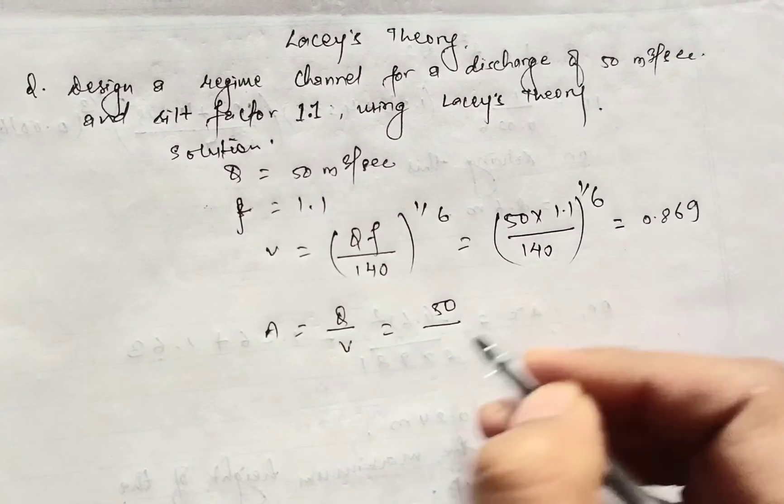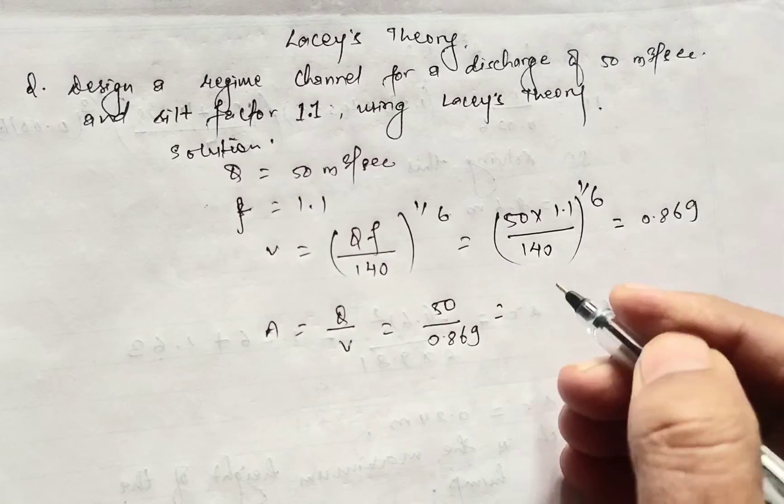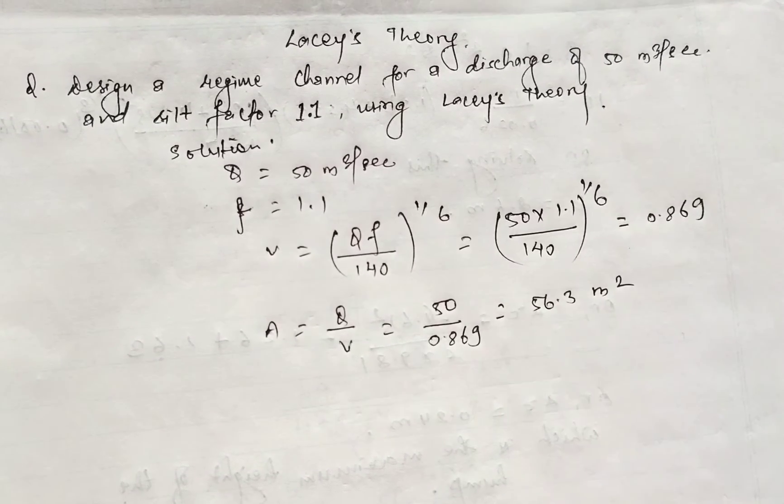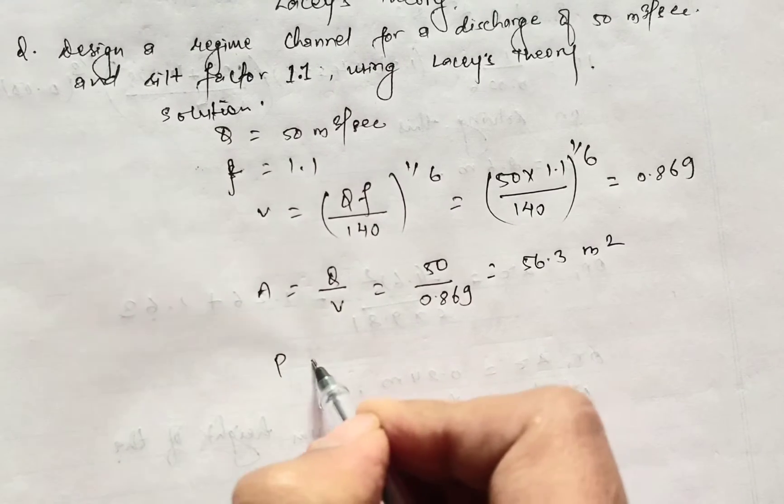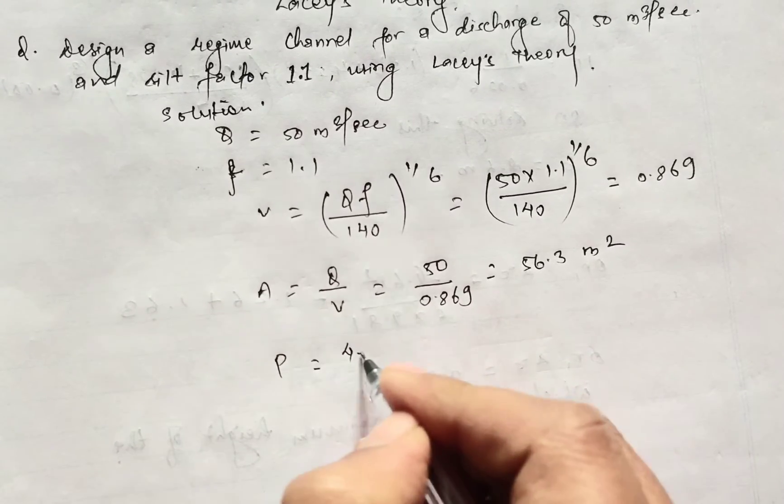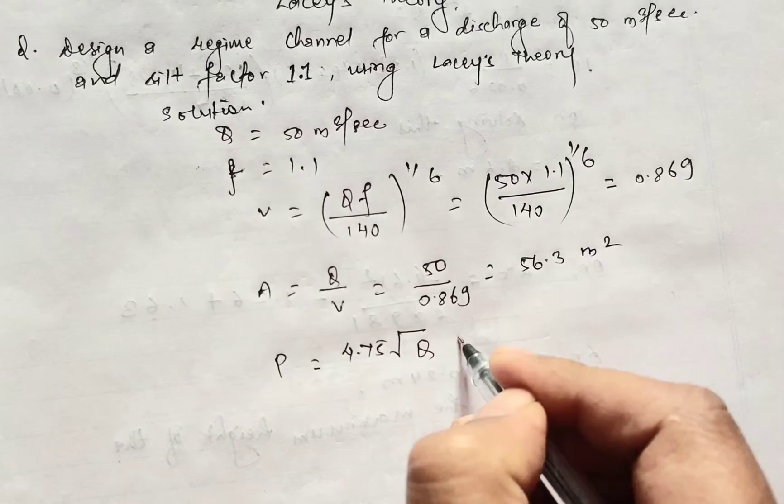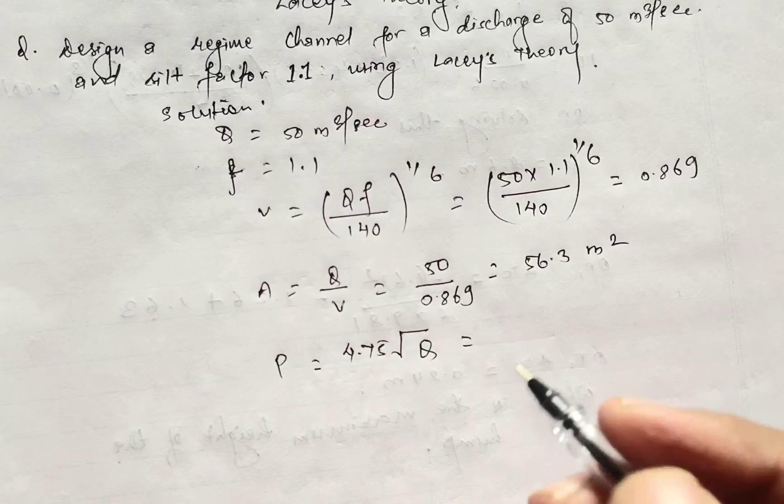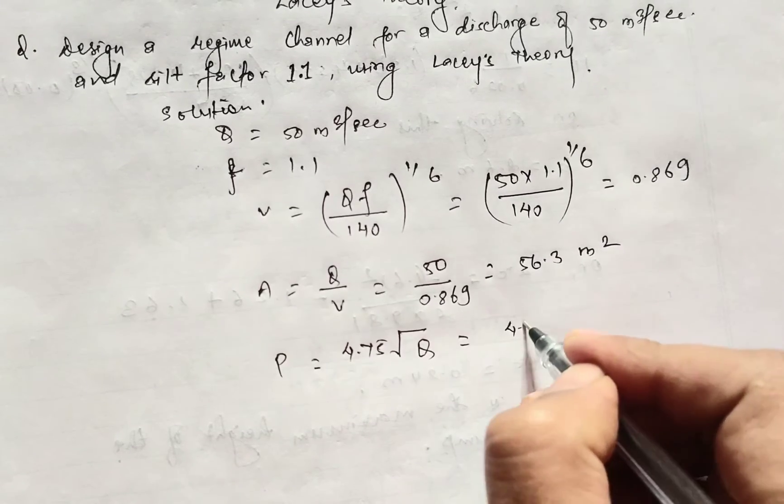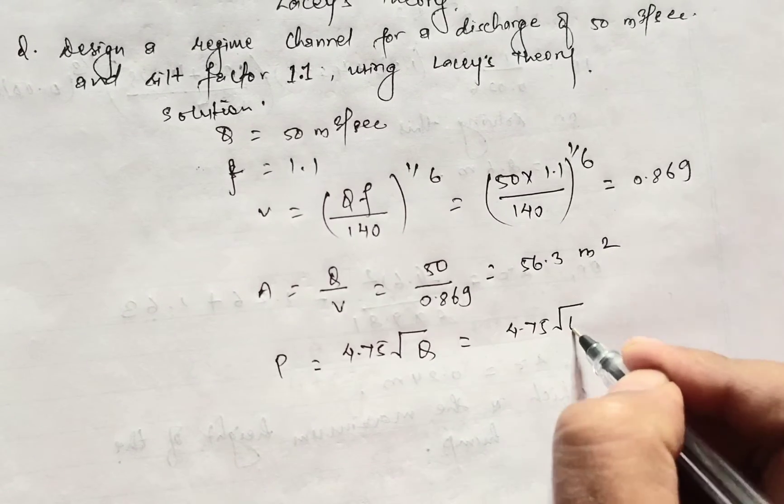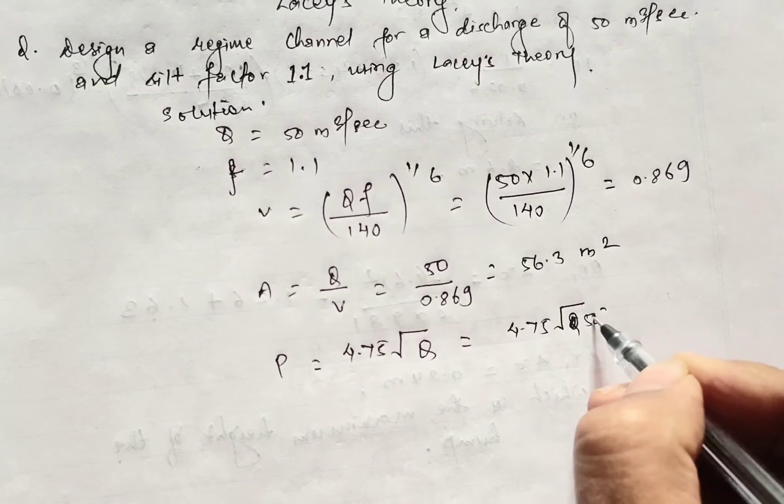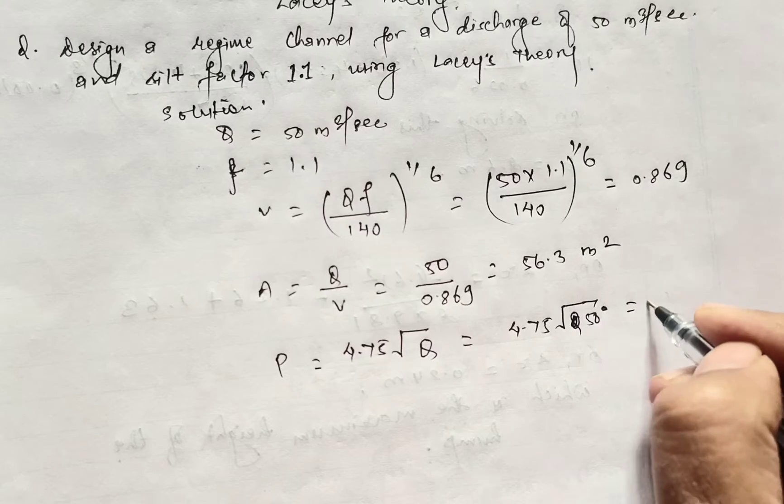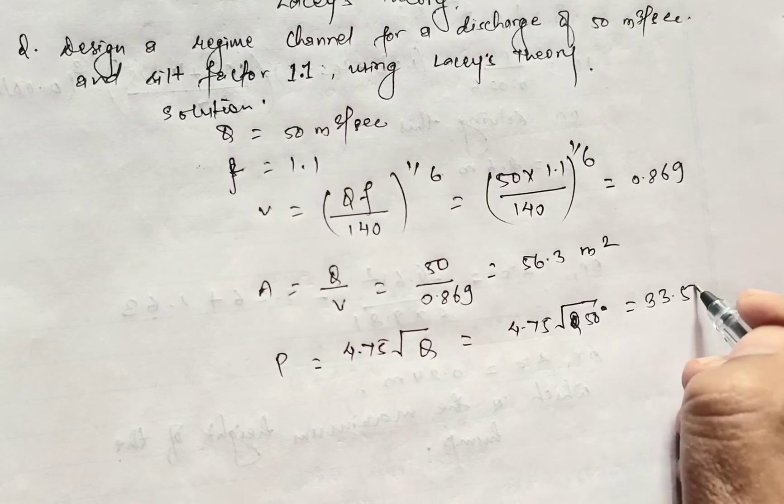Next we'll calculate the perimeter P. P equals 4.75 root over Q - this is the perimeter calculation formula in Lacey's theory. So P equals 4.75 root over 50, which equals 33.56 meter.